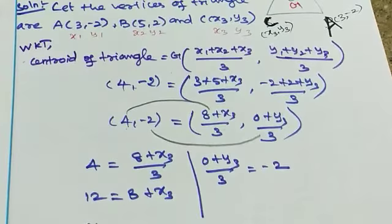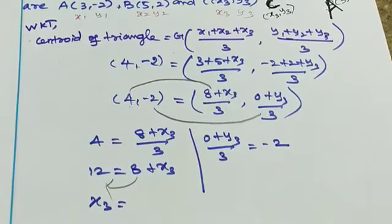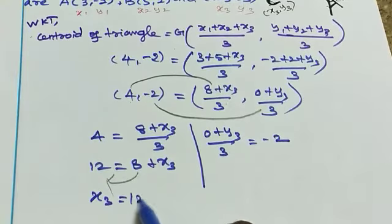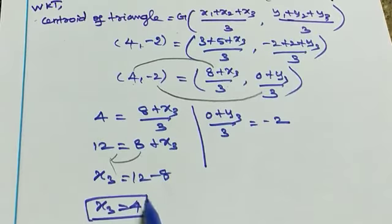Moving 8 to the left side: 12 - 8 = x3. Therefore, x3 = 4. What is x3 value? 4.